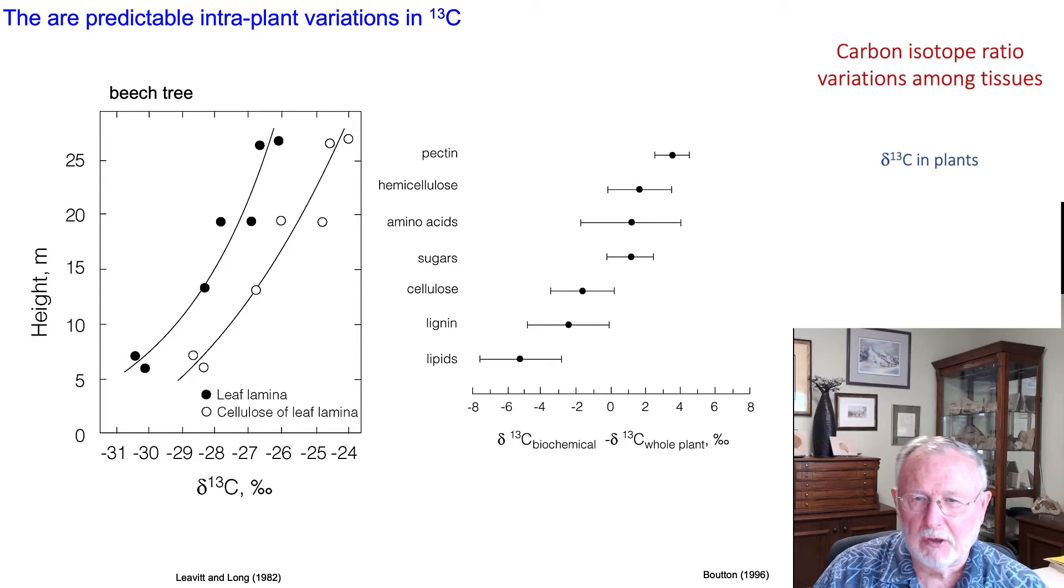It's important to recognize that as you sample through the height of a tree, in this case a beech tree, the leaf lamina shows a variation in pattern. We'll describe the basis of that variation in the next section.